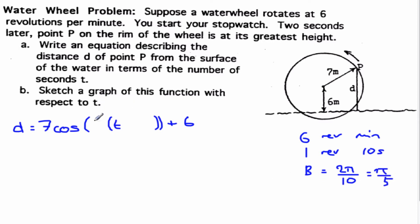When I say b, I'm talking about this part here. So this is pi over five is going to make sure I get a period of ten seconds. And then I just need to worry about this bit. And if I make this negative two, that means I'm going to get to the top of my revolution two seconds after I start.